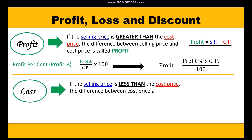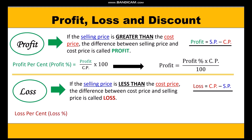Loss = cost price − selling price. Loss percent can be calculated by: loss percent = (loss / cost price) × 100. If we want to find loss, we cross multiply to get: loss = (loss percent × cost price) / 100.